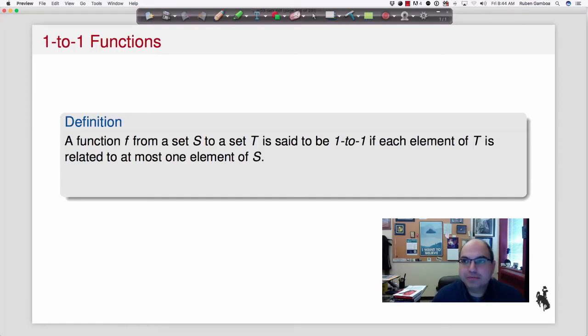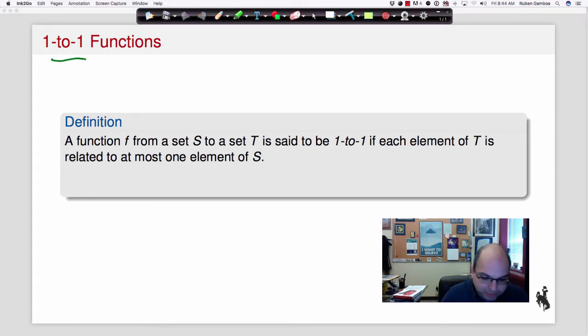So let's look at some properties that functions might have. The first property we're going to discuss is something called one-to-one. And what that means is that each element of t is associated with at most one element of s.